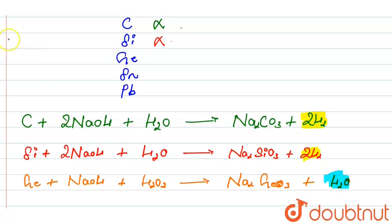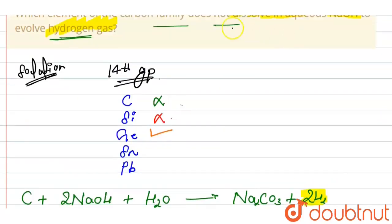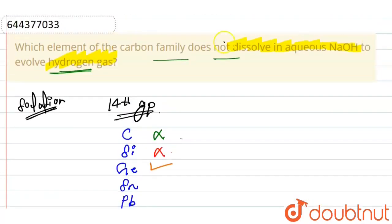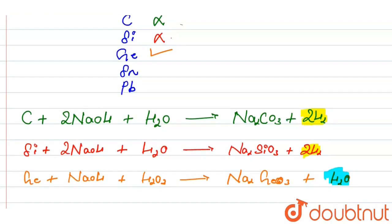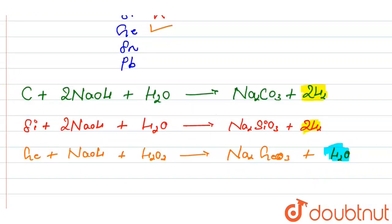According to the question, the required element does not dissolve in aqueous NaOH to evolve hydrogen gas. Germanium does not give hydrogen gas — it gives water. So germanium is our required answer. But we will check the remaining two options as well.